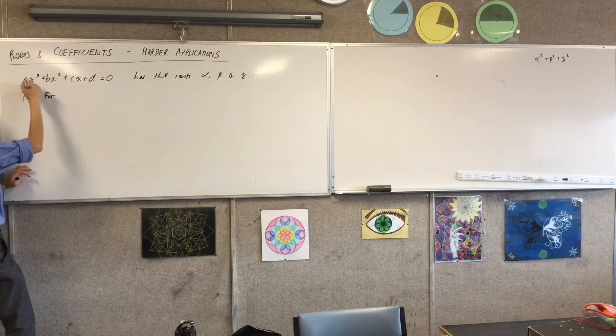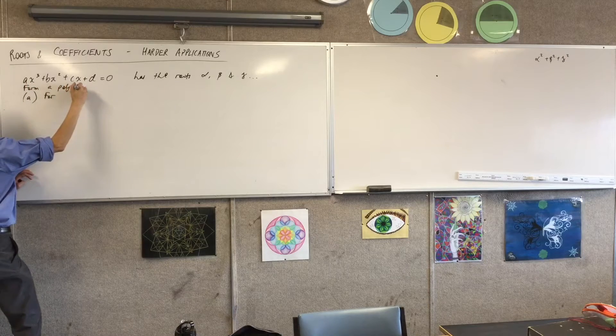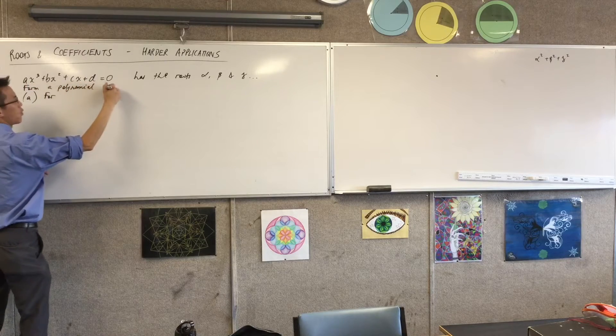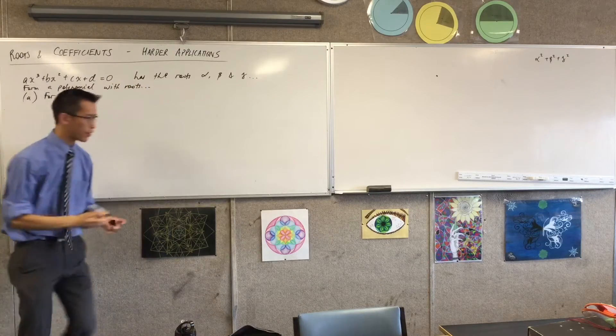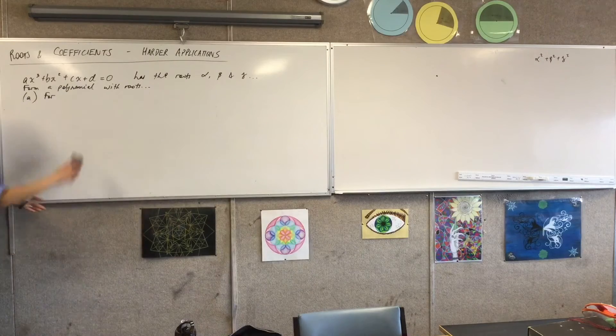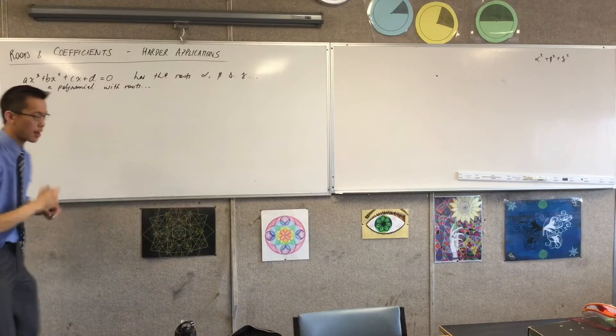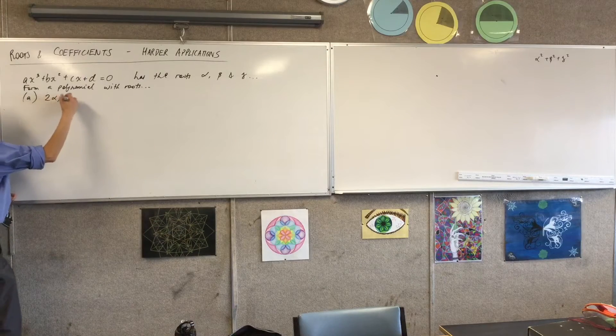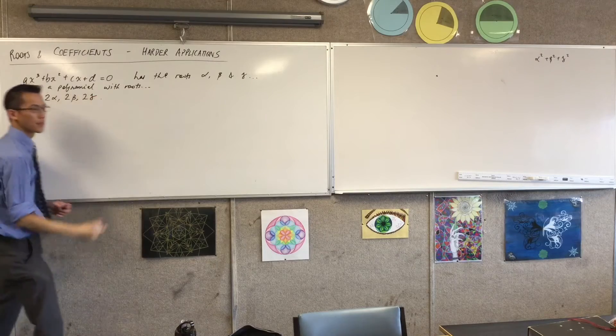We'll say if it has the roots alpha, beta, and gamma, what we're going to do is form two new polynomial equations which have roots that are related to these roots. So we'll do a simple one first. This is part A. Form a polynomial with roots, and for the first one, we're going to do, rather than alpha, beta, and gamma, what would happen if we had a polynomial that had roots that were exactly twice the magnitude, so 2 alpha, 2 beta, and 2 gamma.